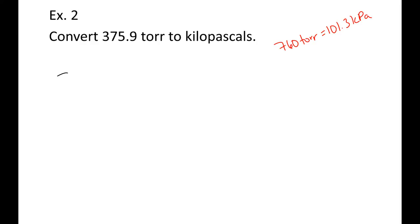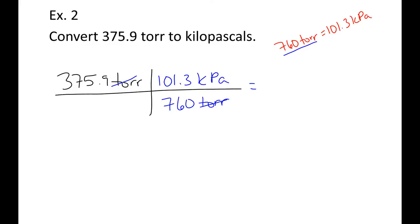Remember, all five of those things were equal to each other, so we just pick out the two we need and set them equal to each other. So, we're going to put 375.9 torr in the top part of our picket fence. Now, we have to put these two things. We're going to put 760 torr at the bottom, so that the torr cross out, which means we put 101.3 kPa on top.